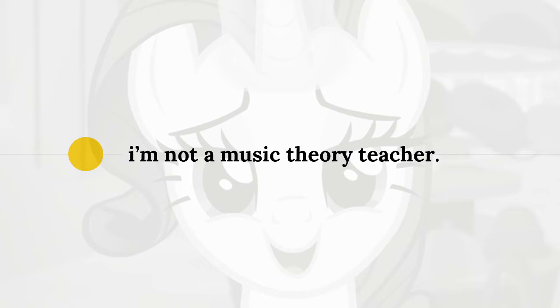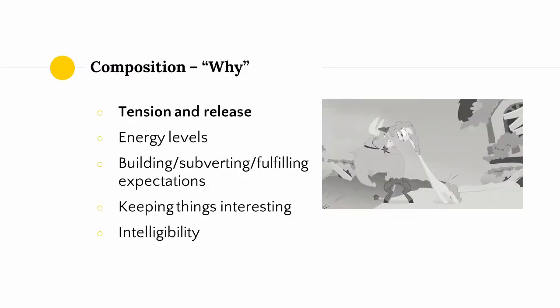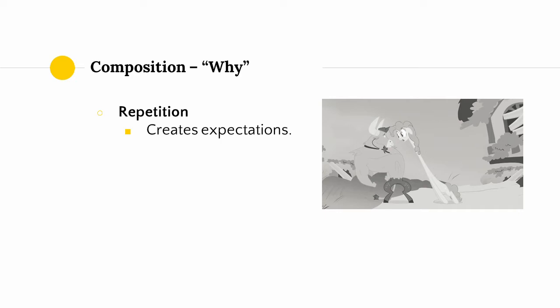This is not a music theory course. I am not formally educated in music — everything I know is haphazardly assembled from little bits and pieces of knowledge I pick up, and I really don't think I have the systematic grounding to give you a good introduction to music theory. So if you want to learn about music theory, you're going to have to consult other learning resources. The why of composition mainly involves thinking about composition as musical storytelling — no different than when writing a fictional story, you think about things like tension and release, controlling the energy levels, building and subverting or fulfilling expectations, making sure to keep things interesting for the listener throughout, and making sure the most important elements — the vocals — are intelligible. In particular, repetition is a very important element in musical storytelling. Most often, repetition creates expectations which can then be subverted or fulfilled.